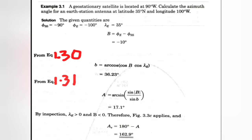To find the azimuth angle, we first need to find capital A. The formula is: sin(A) = sin(B) / sin(b). We need to find capital B and small b. The formulas for capital B and small b are given, and we can then easily find the value of capital A.